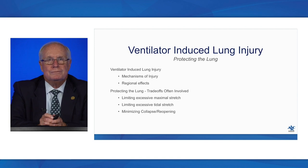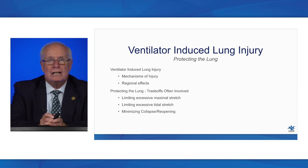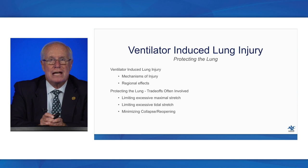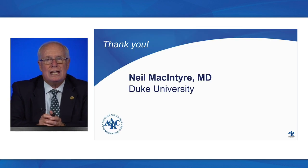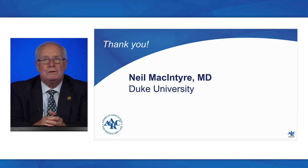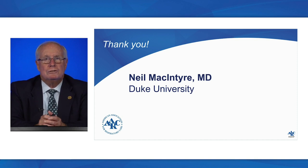In summary, I've reviewed the three mechanisms of ventilator-induced lung injury: overdistension, excessive tidal strain, and collapse-and-reopening — all quite regional in nature. Our goals are to address these three major mechanisms: limit excessive maximal stretch, limit excessive tidal stretch, and minimize collapse and reopening. Thank you all for joining us today. Hopefully you have a better understanding of a logical way to approach and round on your mechanically ventilated patients.